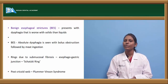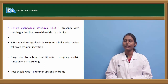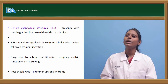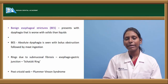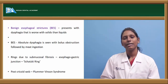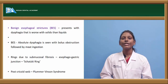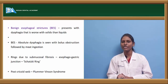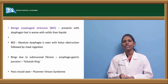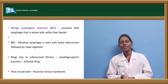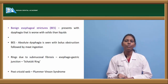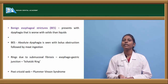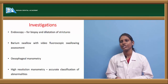Rings due to submucosal fibrosis — Schatzki rings at the esophagogastric junction — can be seen as fibrous rings in the esophagus. Post-cricoid webs can be seen in Plummer-Vinson syndrome, which is severe iron deficiency anemia, also called Plummer-Vinson or Paterson-Kelly syndrome. Patients with this condition usually have difficulty in swallowing, i.e., dysphagia.